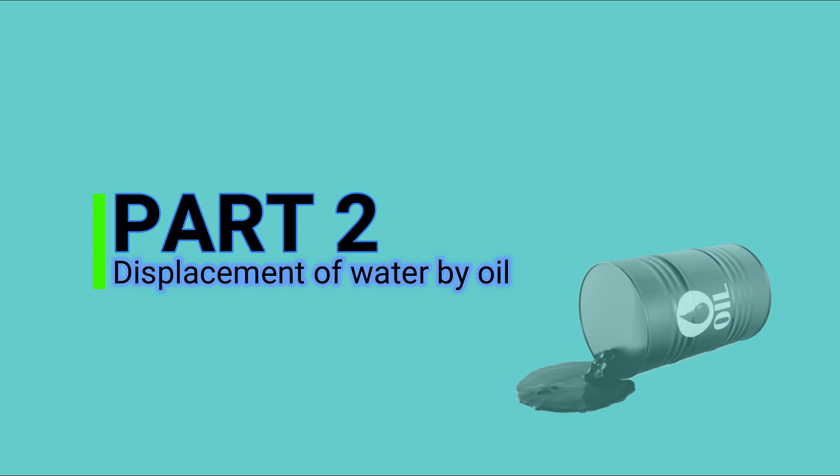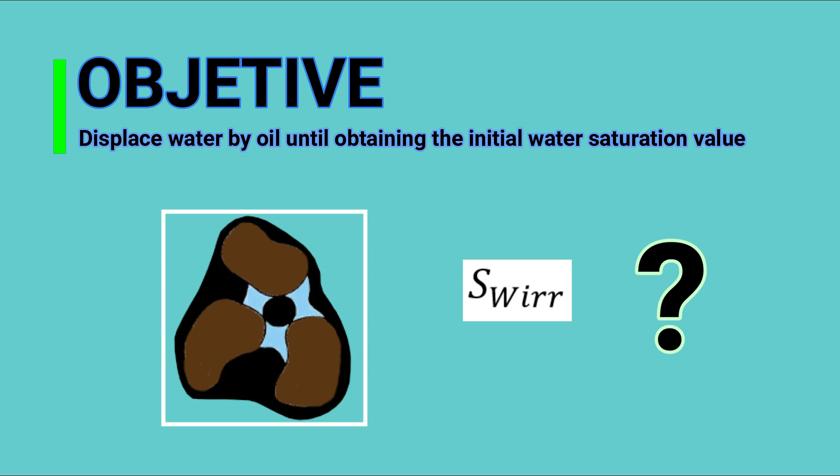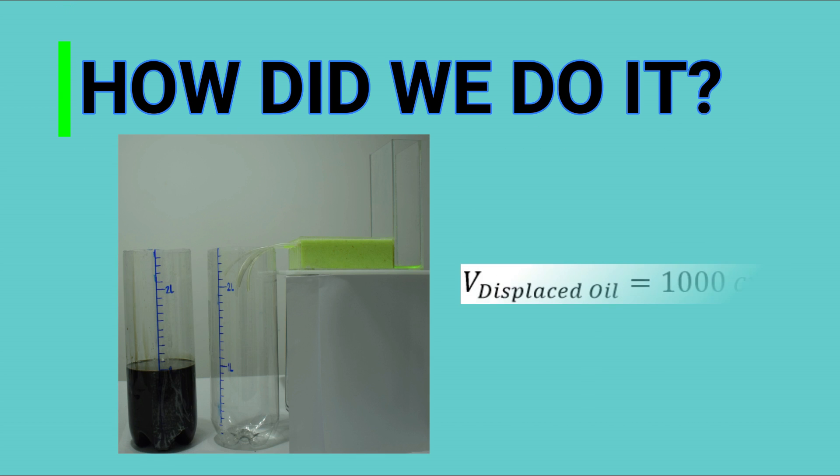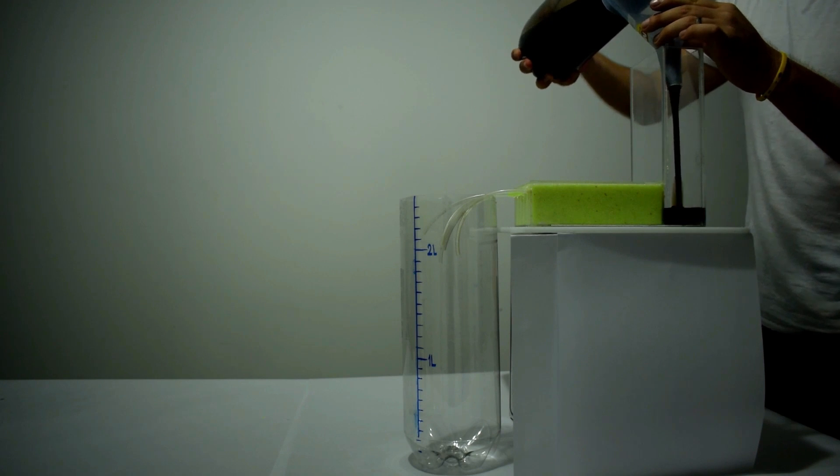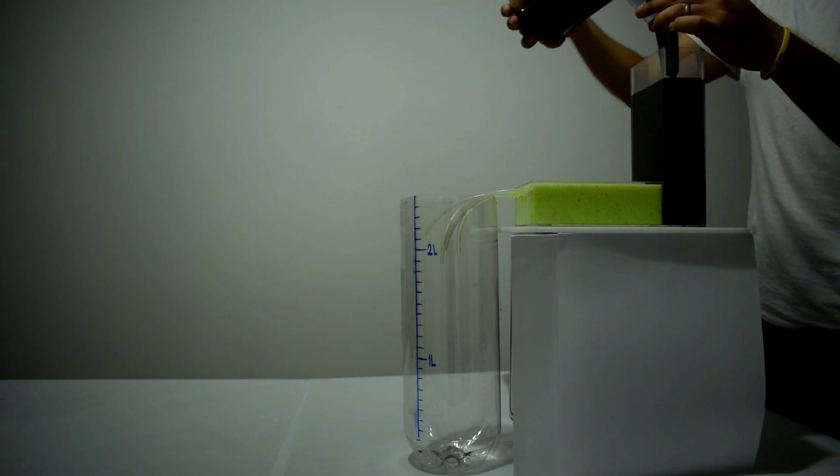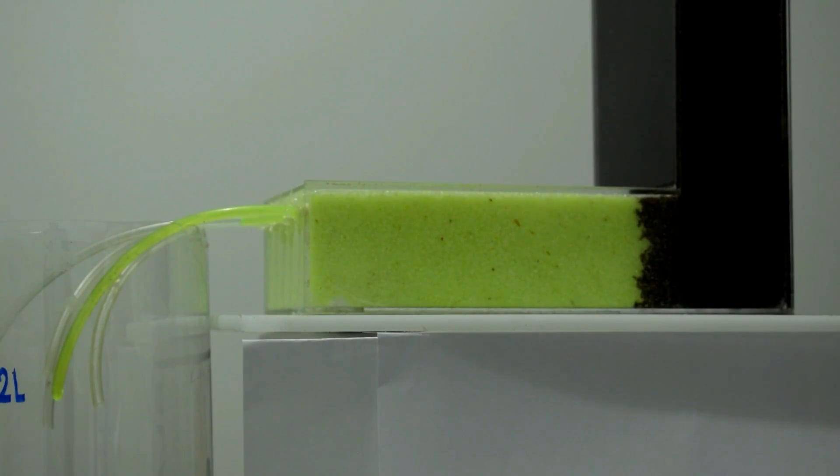Part two: displacement of water by oil. The objective is to obtain the initial water saturation sphere. How did we do it? We injected 1000 cubic centimeters in the porous medium to recreate the oil migration to the stratigraphic trap.